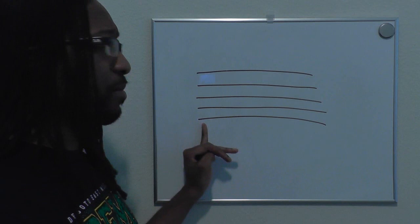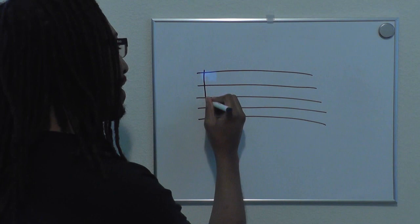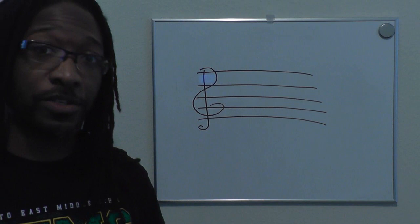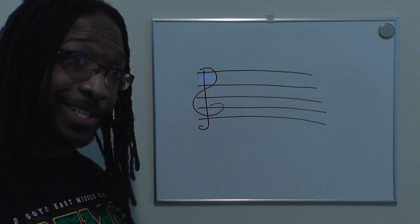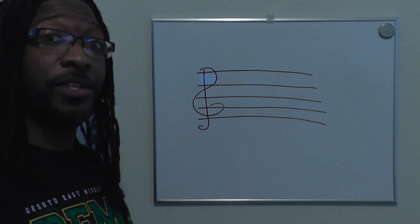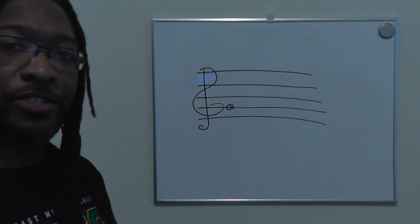Each one of these lines and spaces has a name, either A through G, but that's also determined by which symbol is on the left side. If there's no symbol you really can't tell what it is. We're going to use this one right here, which is called the treble clef — also called the G clef — because this part right here circles the line that is G.